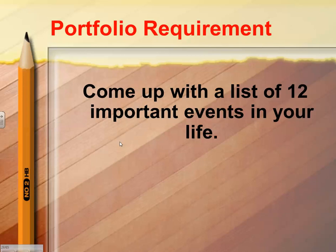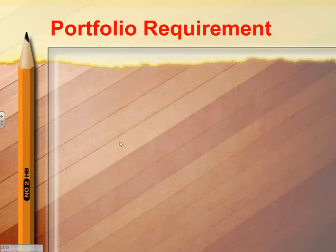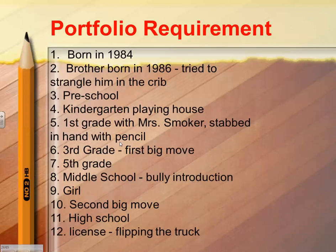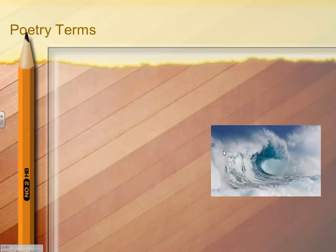The next portfolio requirement is that you had to come up with a list of 12 important events in your life — just 12 events that have been important. An example is given here, and we're going to do something with those in a minute.